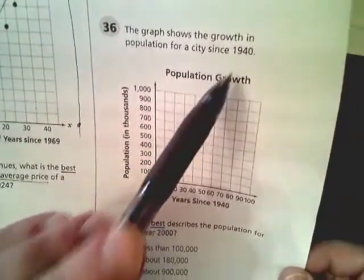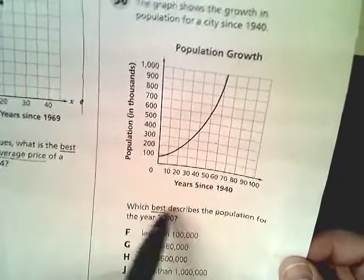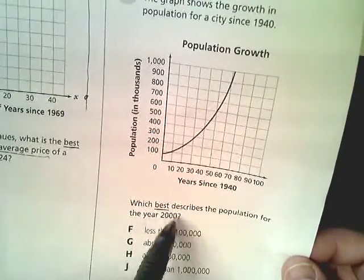Up here it says 1940, it's off the screen, sorry. This says which best describes the population for the year 2000?